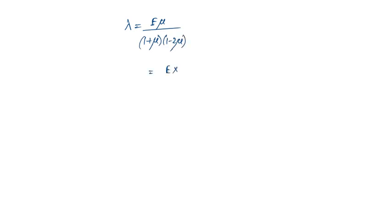Substituting E into 0.25 by (1 plus 0.25) into (1 minus 2 into 0.25), which equals lambda equals E into 2 by 5. So E will be equal to 5 by 2 lambda, that is 2.5 lambda.